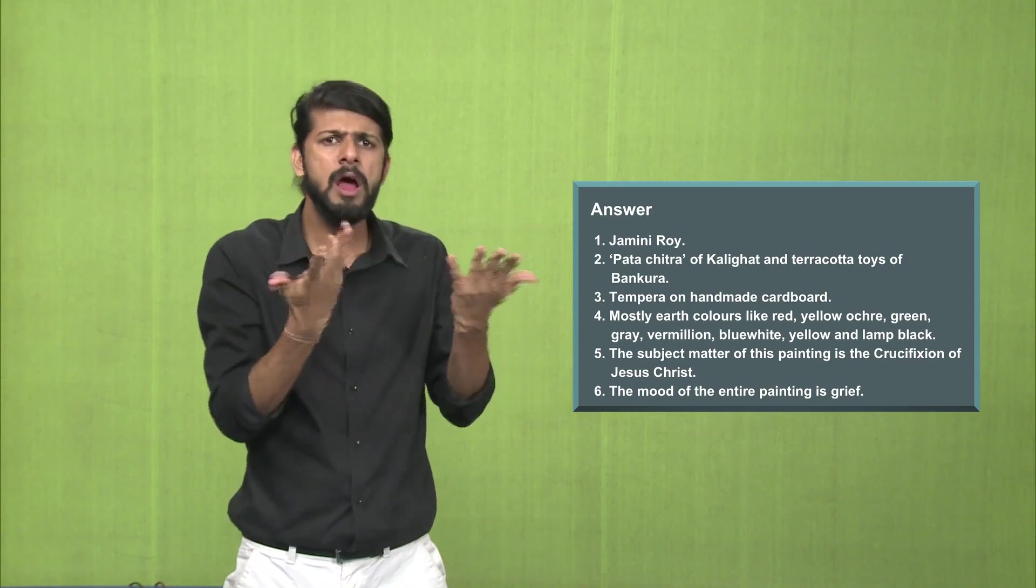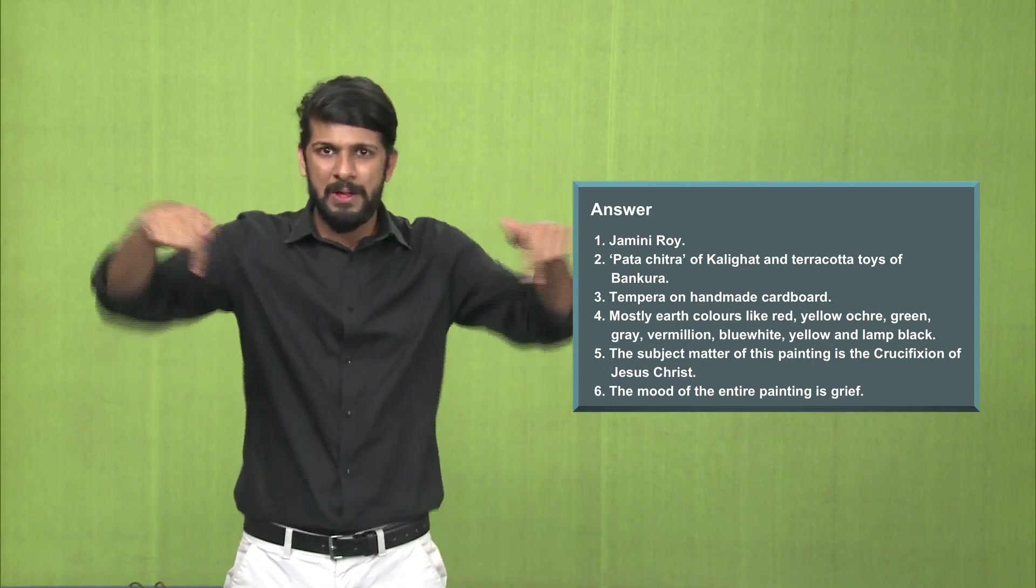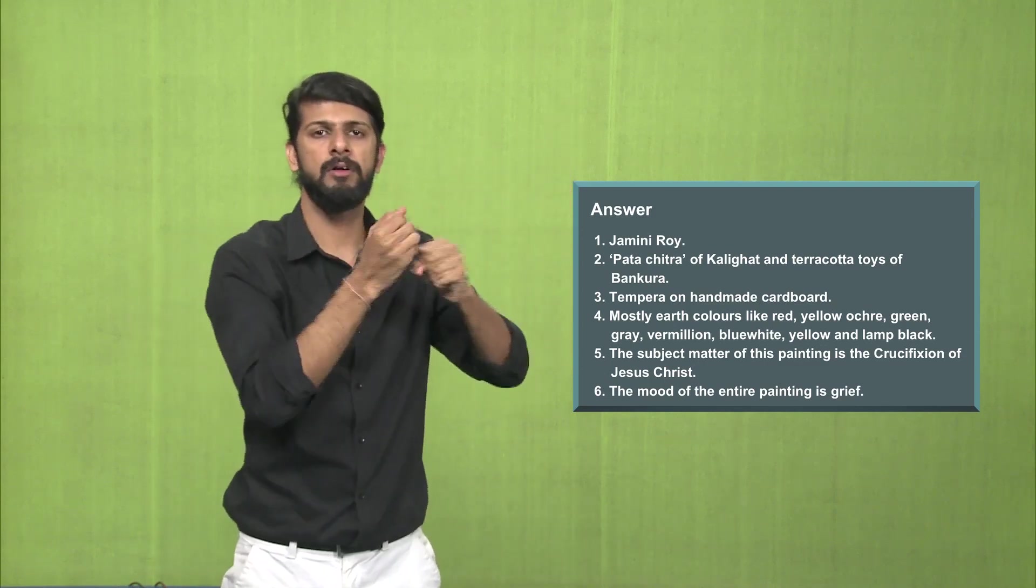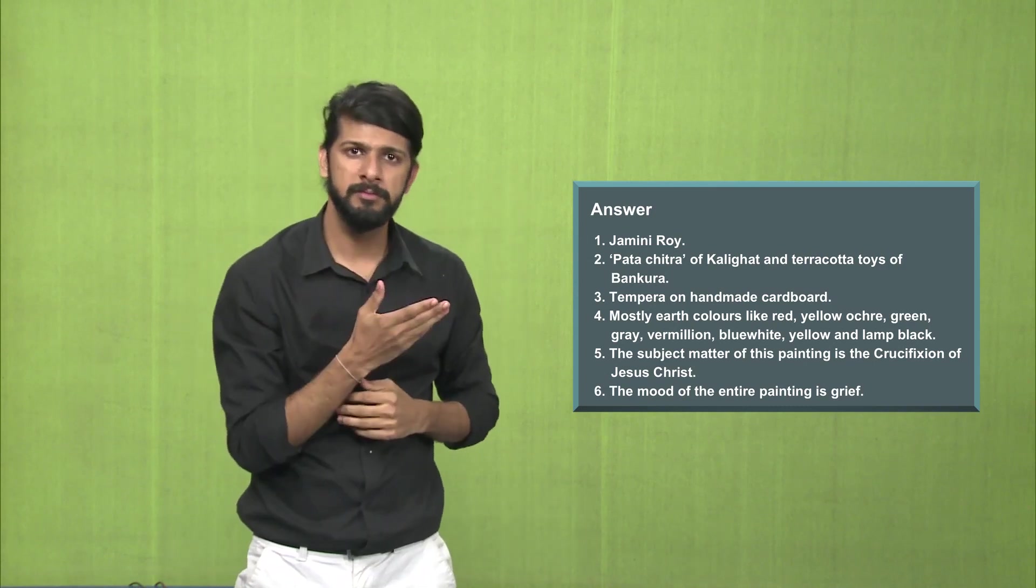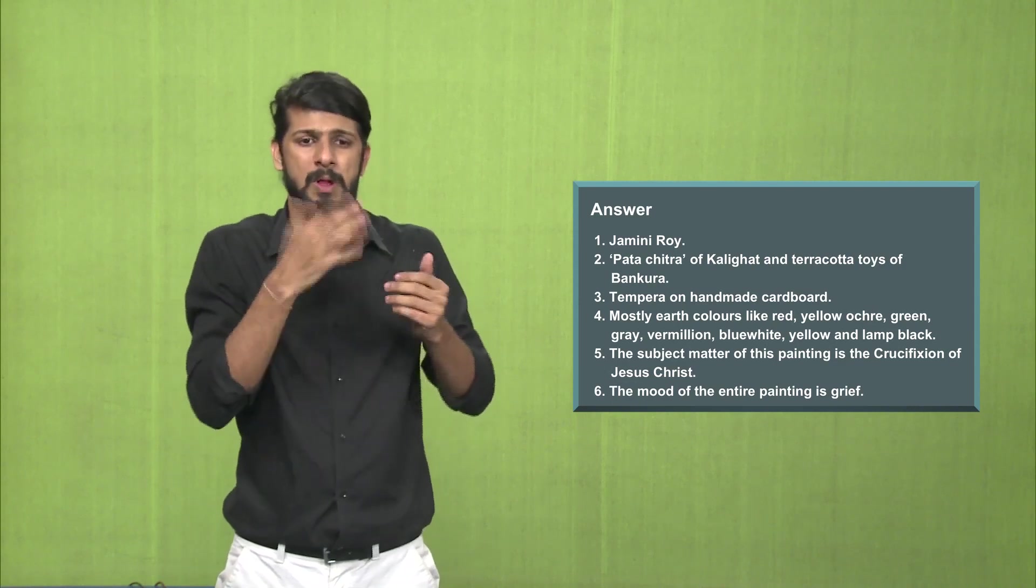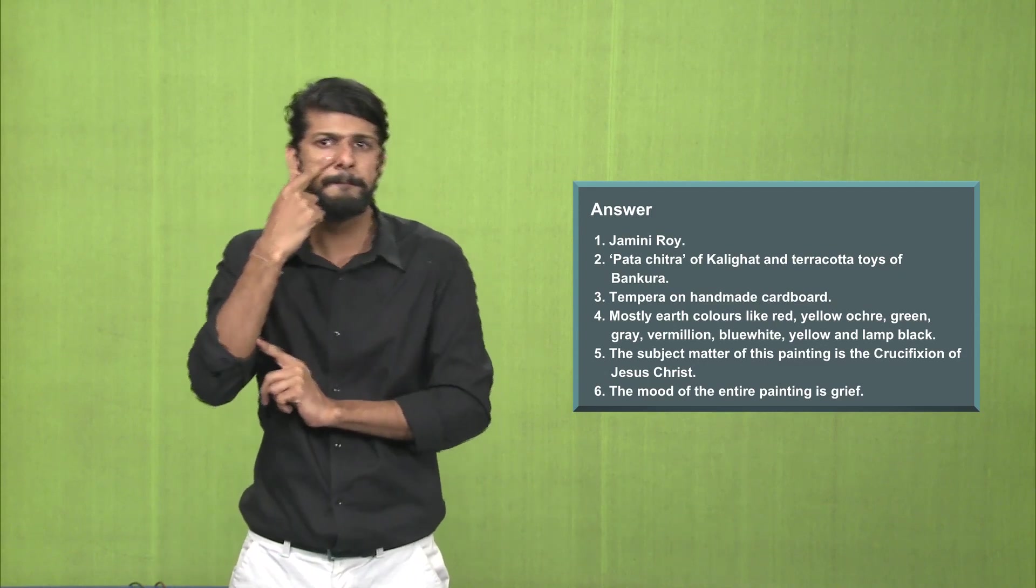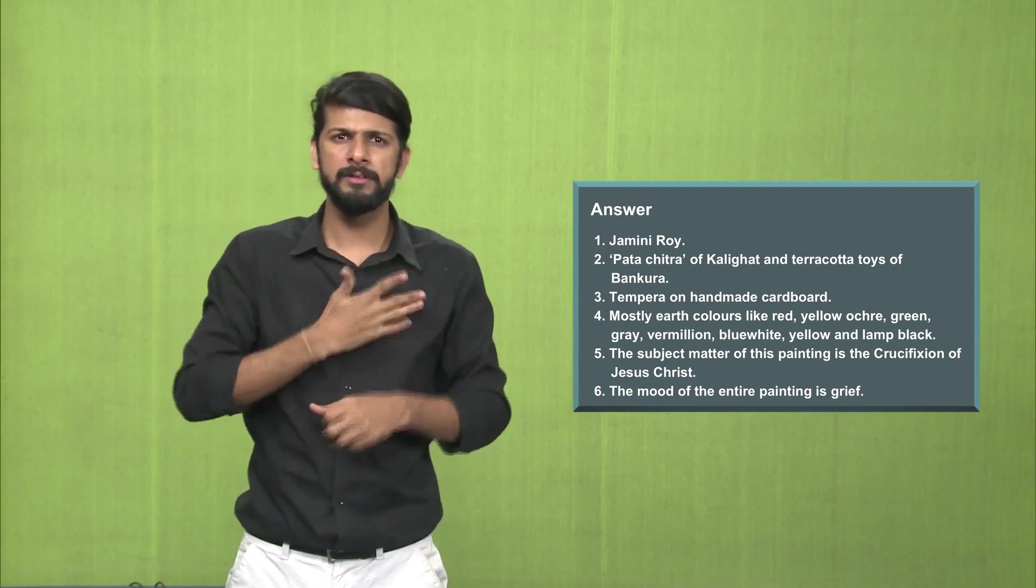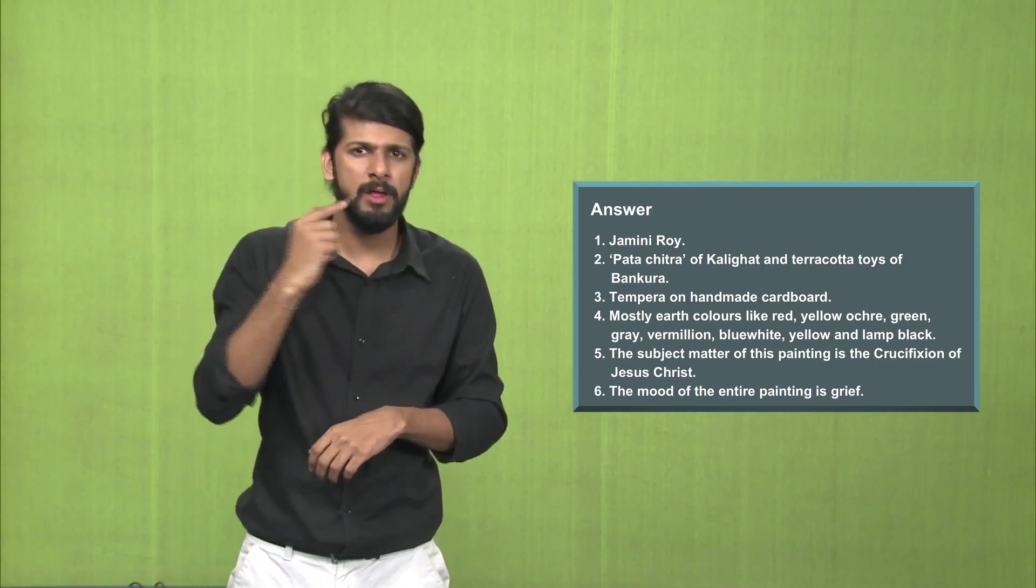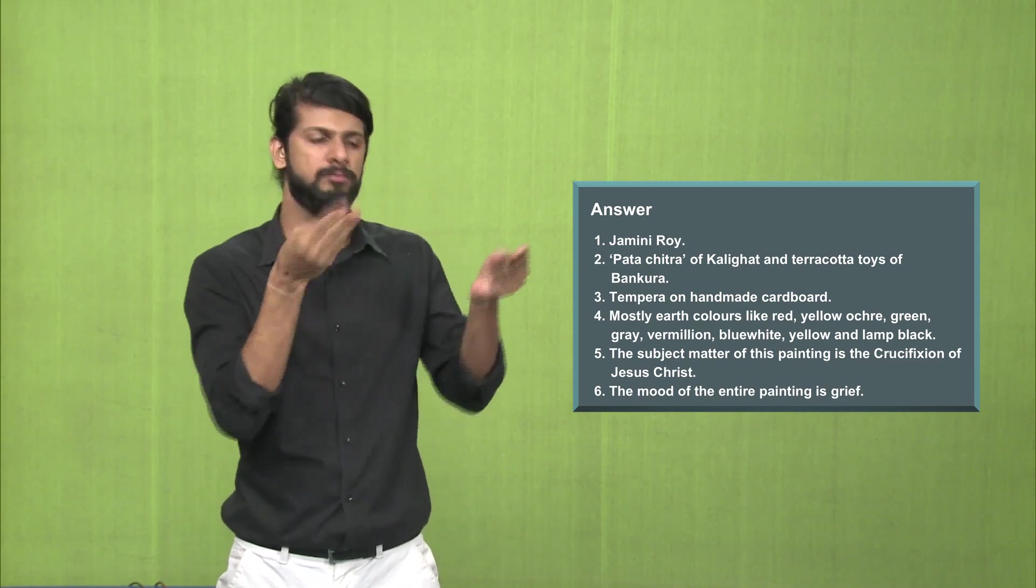Answer number 3, this painting is made by the tempera technique on handmade cardboard. Answer number 4, the colors used in this painting are mostly earth colors, which is red, yellow, ochre, green, grey, vermilion, blue, white, yellow and black. The black which we get from the lamp soot, these were the colors used by the artist.